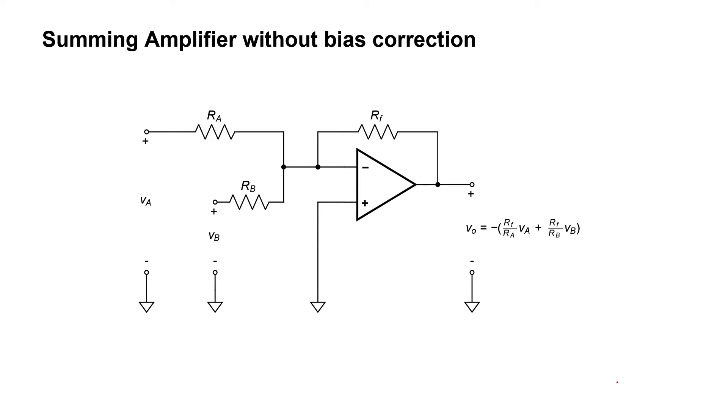We're going to look at a summing amplifier with and without bias current correction. First let's look at the version of the summing amplifier without bias current correction. A summing amplifier is a type of op amp circuit that you can use when you want to sum different voltages together.